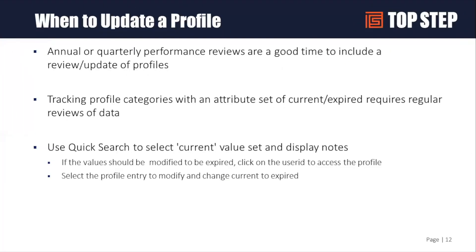If you don't use that reminder technique, the best ways to get a profile updated would be on things like a quarterly or annual performance review — have your manager rely on your skill database as part of that review so you have a way to understand when it's updated and when it's out of date. Or use tags like 'current' and 'expired' — those are attribute sets you would use for certain categories.